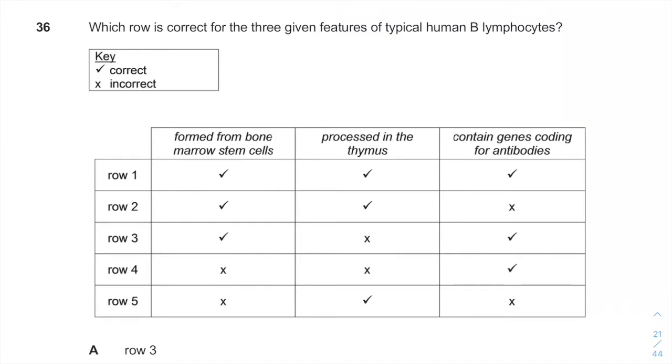Which row is correct for the three given features of a typical human B lymphocyte? B lymphocytes and T lymphocytes are two very specific cells you will have to know when you study immunology for the IMAT exam.